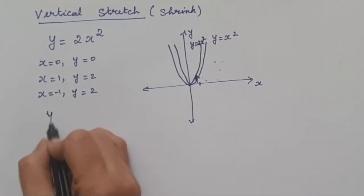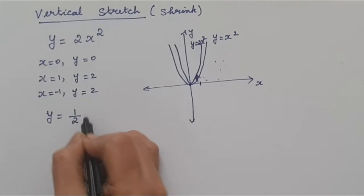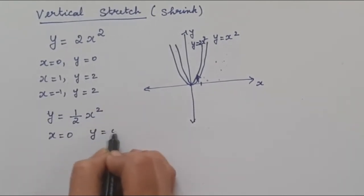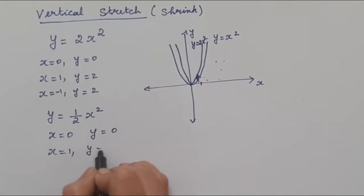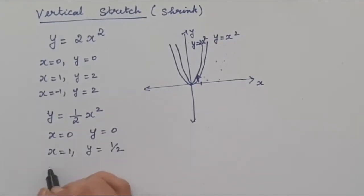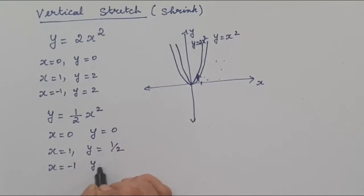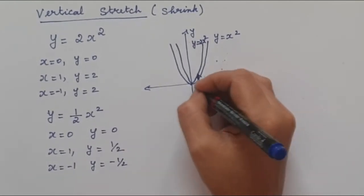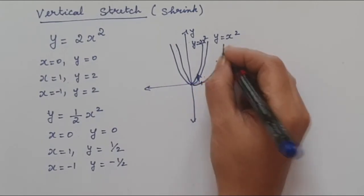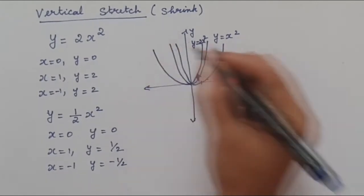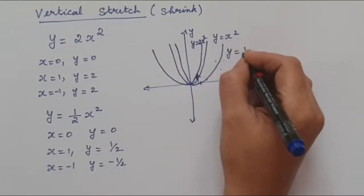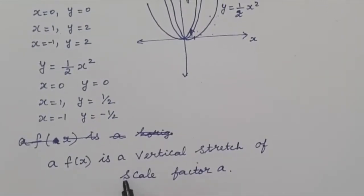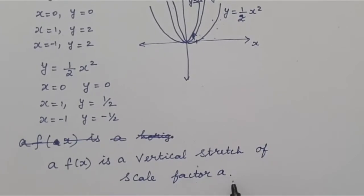Similarly, for y = ½x²: when x = 0, y = 0. When x = 1, y = ½. When x = -1, y = ½. So the graph becomes extended — wider. That is y = ½x². So A·f(x) is a vertical stretch of scale factor A.